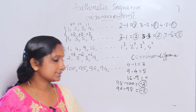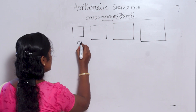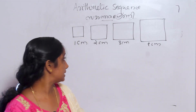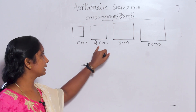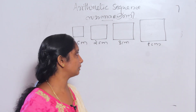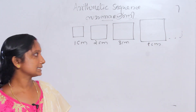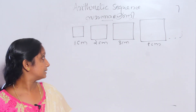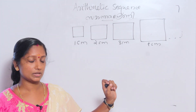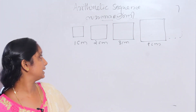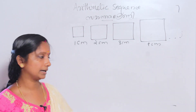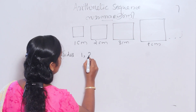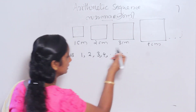Let's take an example from our text. We have squares of sizes 1 cm, 2 cm, 3 cm, and 4 cm. These squares — 1 cm, 2 cm, 3 cm, 4 cm — form a sequence. The sides of these squares form the sequence 1, 2, 3, 4.